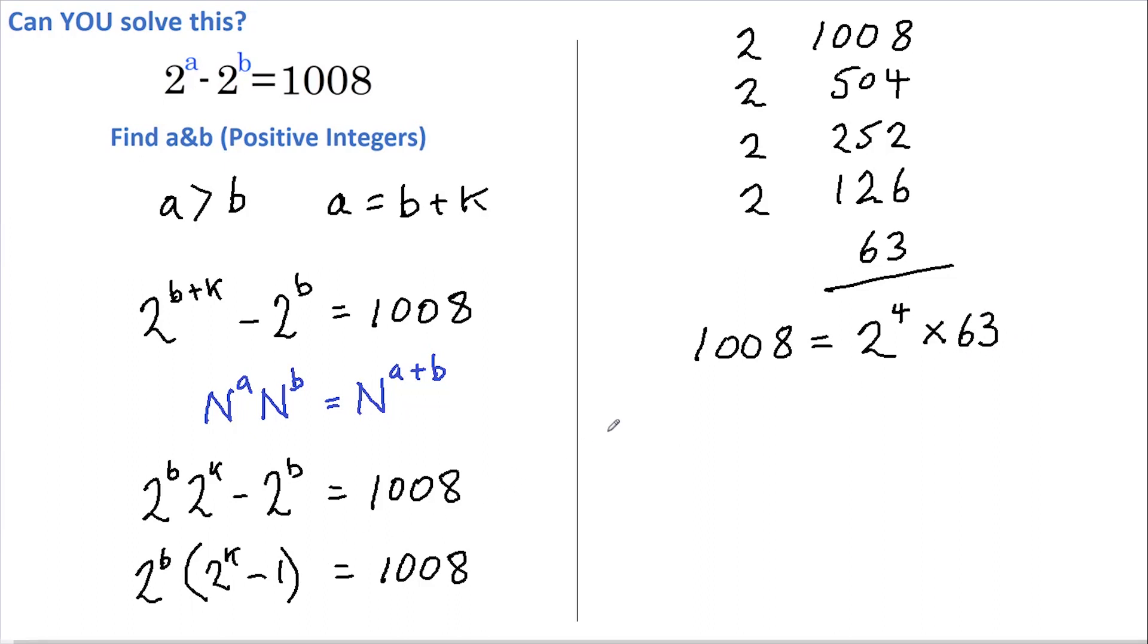And if we match this up with the left-hand side of this equation, we can say that 2 to the power of b equals 2 to the 4, and 2 to the power of k less 1 equals 63. Since the bases here are the same, we can conclude that b must equal 4. And rearranging here, we get that 2 to the power of k must equal 63 plus 1, which is 64. Therefore, 2 to the power of k equals 2 to the power of 6, and again as the bases are equal, we can set the powers equal and k equals 6.